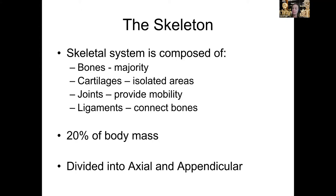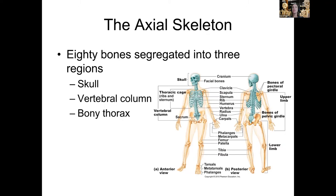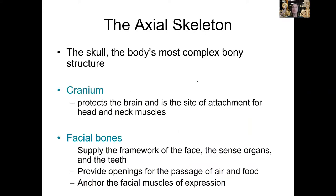We divide our bones into axial and appendicular. The axial skeleton — shown in blue in this image — is everything right in the middle: the skull, the vertebrae, and the bony thorax, which is the ribs and the sternum. We're going to go through the skull first, then the vertebrae, then the bony thorax.